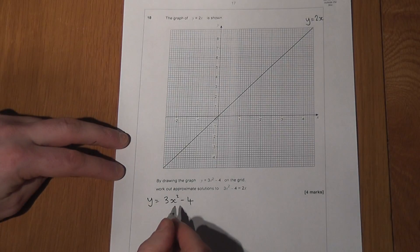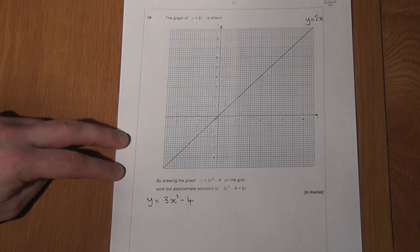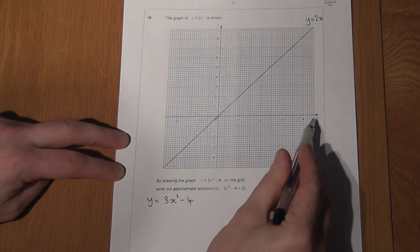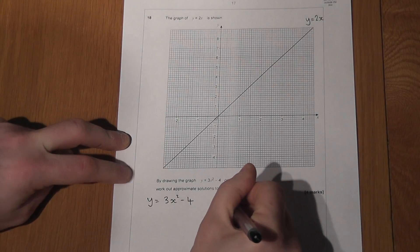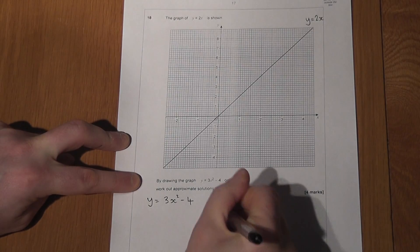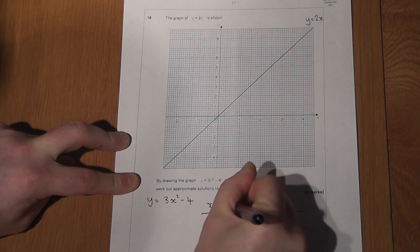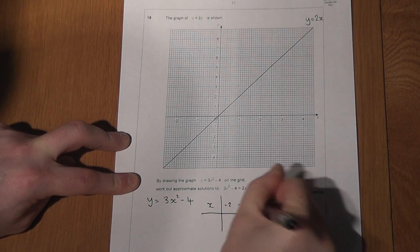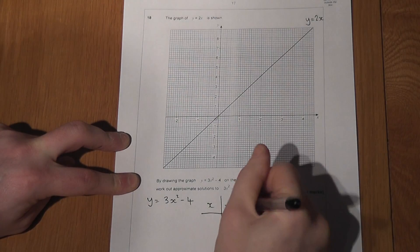Now to draw this curve on the grid we can use a table of values and the x values happen to go from minus 2 to 4 so I'm going to draw a table of values for x which goes from minus 2, minus 1, 0, 1, 2, 3 and then 4.